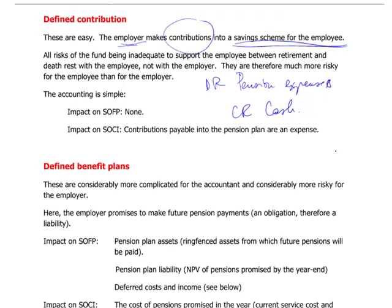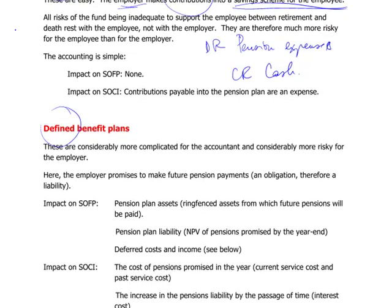Defined benefit plans are slightly different. Both types have the word 'defined,' which means the figures must be known, must be agreed, and must be in the agreement between the employer and the employee. With defined benefit plans, the employer promises to make future pension payments, and that creates an obligation today that should be reflected in the financial statements.